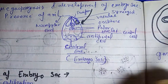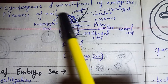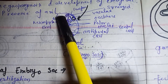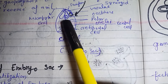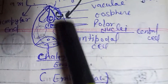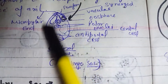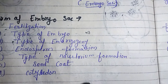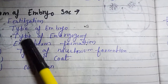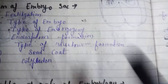Development of the embryo sac: in this transformation cycle, it will become the microbial cells, antipodal cells, polar nuclei, and synergid cells — this is the embryo sac development. We will study the type of embryo in detail in the next video.